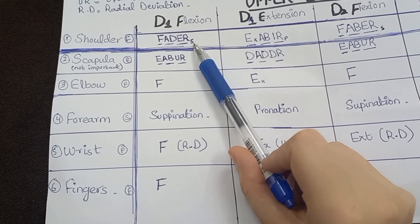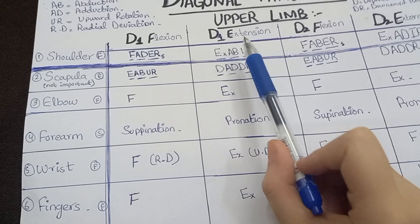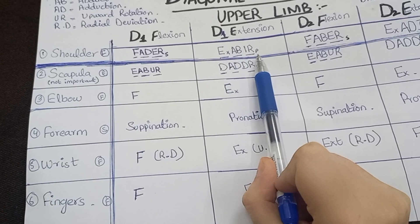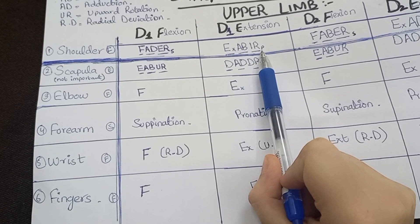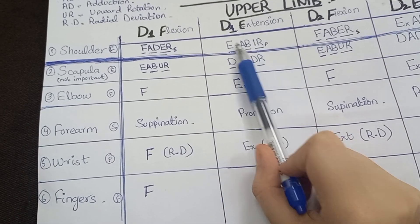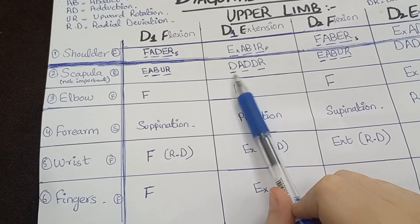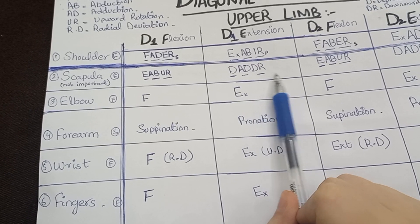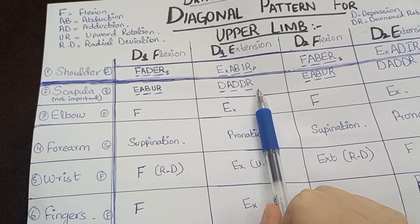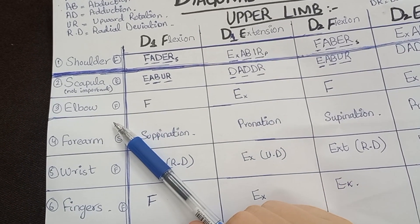Moving towards the D1 extension pattern of the shoulder, the mnemonic is 'Ex-Ab-IR' — extension, abduction, internal rotation — and a smaller 'P' for pronation. In D1 extension there is pronation, and in D1 flexion there is supination. For the scapula in D1 extension, the mnemonic is double-D-R — depression, adduction, and downward rotation.